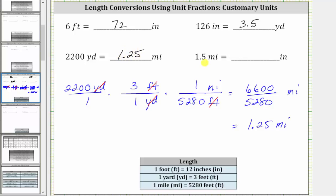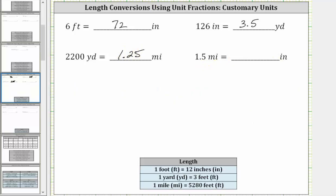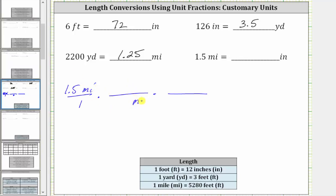For the last conversion, we want to convert 1.5 miles to inches. We begin by writing 1.5 miles as a fraction with a denominator of one. There's no direct conversion from miles to inches. We can use the conversion one mile equals 5,280 feet to convert miles to feet, and then use one foot equals 12 inches to convert feet to inches. Since we're using two conversions, we need two unit fractions. We want miles to simplify out, so miles must be in the denominator and feet in the numerator. One mile equals 5,280 feet, and therefore the first unit fraction is 5,280 feet over one mile.